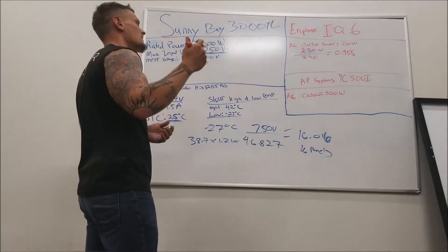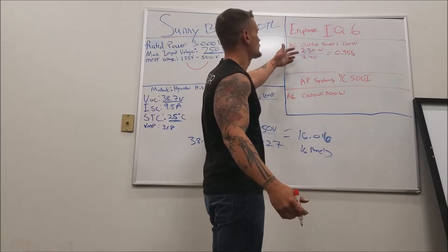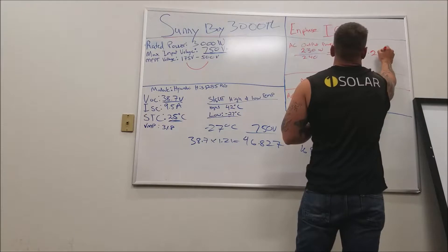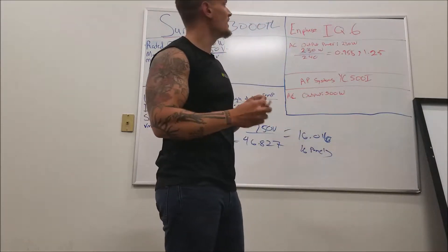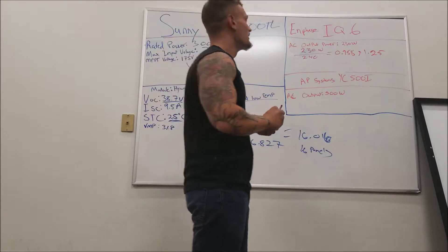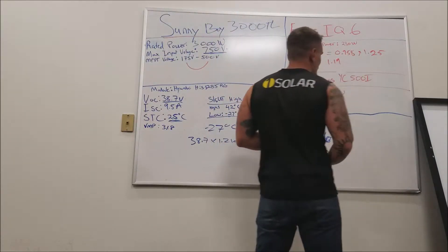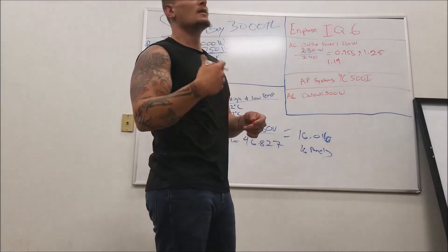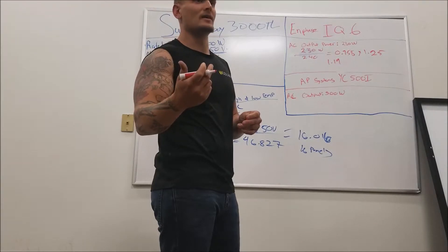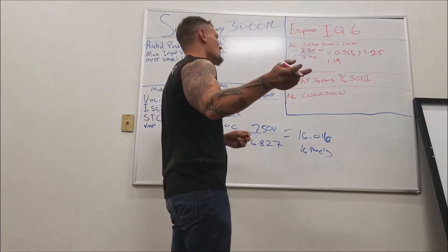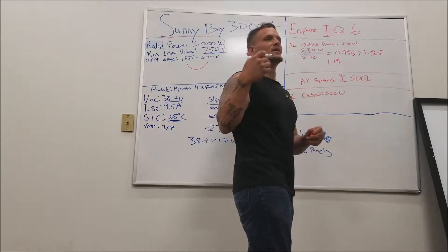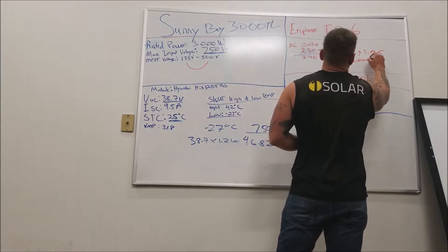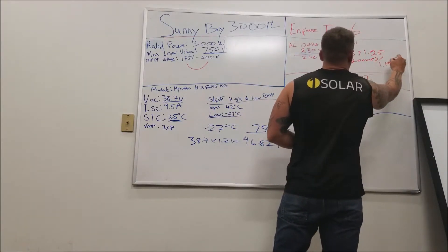So that's 0.958 amps, and then we need to multiply by the continuous current factor — 0.958 times 1.25 equals 1.19 amps continuous current. We're using an Enphase system with 12-gauge wire. NEC 240.4 tells us with a 12-gauge wire we need to use a 20-amp overcurrent protection device, so we need to stay under 20 amps. We take 20 amps and divide by 1.19 amps.